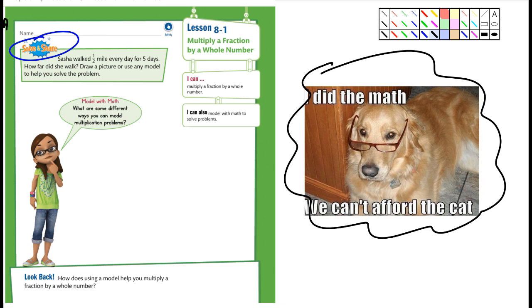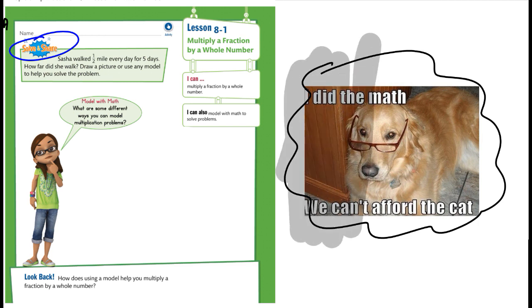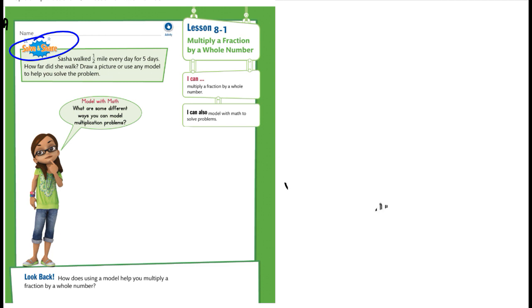Let's see. Lesson 8-1: multiplying a fraction by a whole number. Okay, so what it says: Sasha walked half a mile every day for five days. How far did she walk? Draw a picture or use any model. Not worried about a model at this point. But let's look at this for a second.